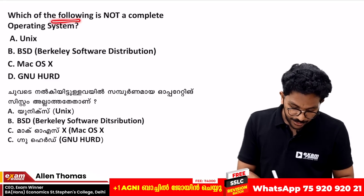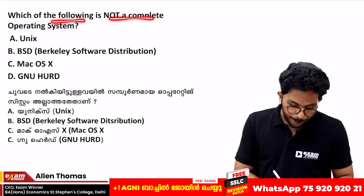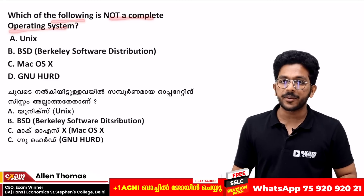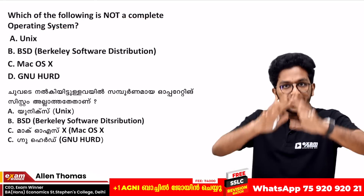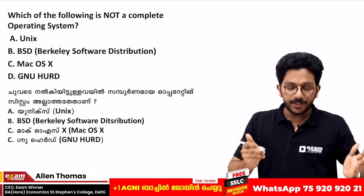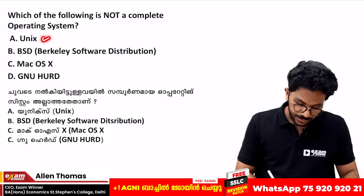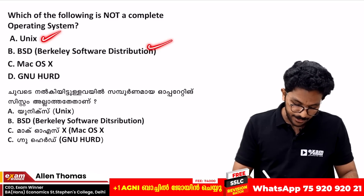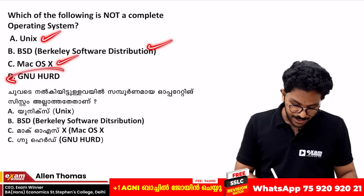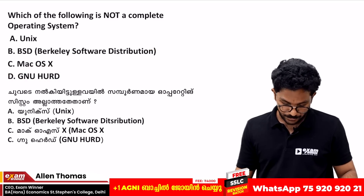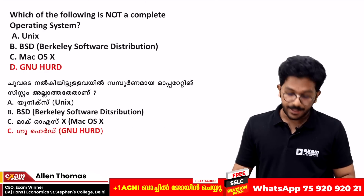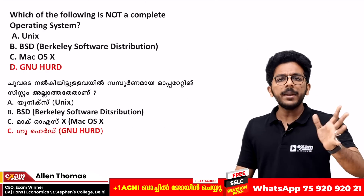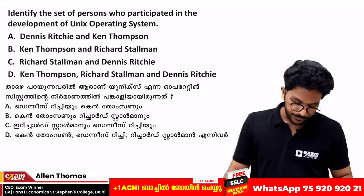Which of the following is not a complete operating system? The options are Unix, BSD, Mac, or GNU Herd. GNU Herd is considered a complete operating system.